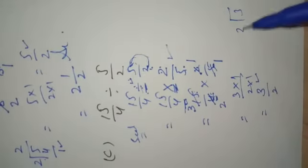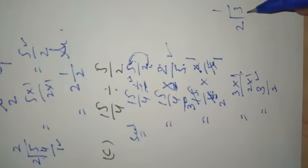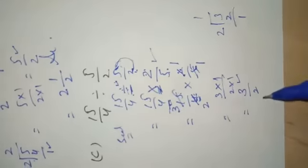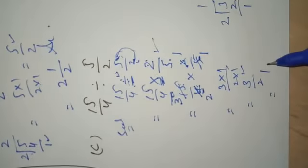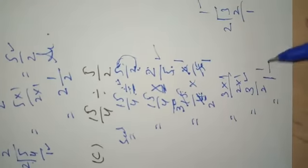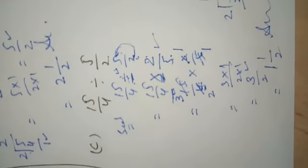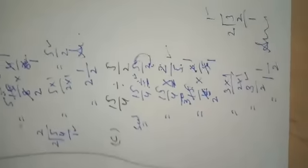Now 3 over 2, 2 goes into 3 one time. The answer comes to 1 and 1 remainder in mixed fraction: 1 and 1 over 2. Okay, that's all.